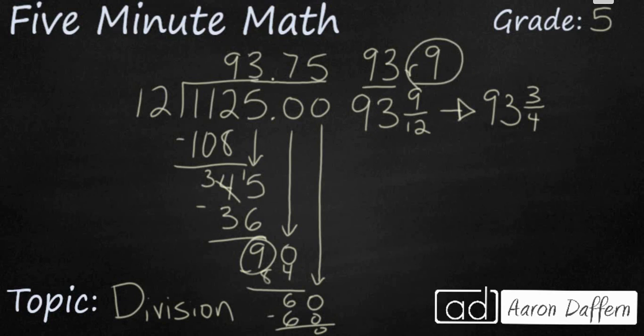Or remember, you can write that as a mixed number. With the 9 serving as your numerator. And your divisor 12 serving as your denominator. So 9 twelfths reduces to 3 fourths. Or you can add a decimal. You have to end up adding two more zeros. And you can get 93.75. Because 0.75 is the same as 3 quarters.